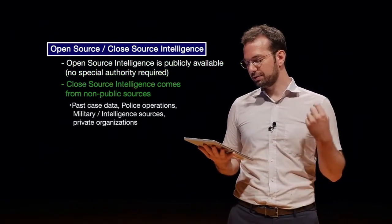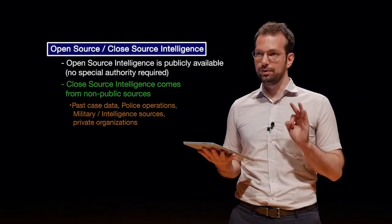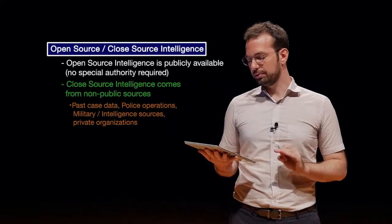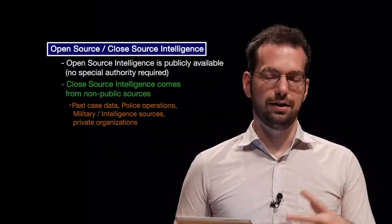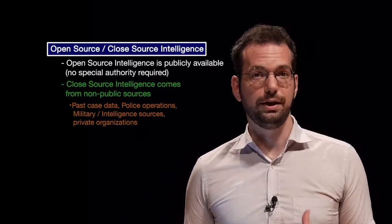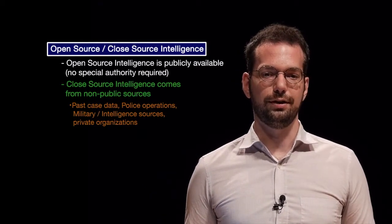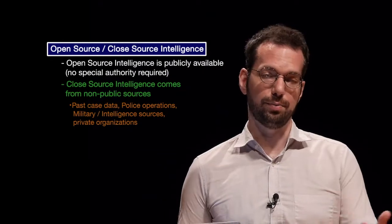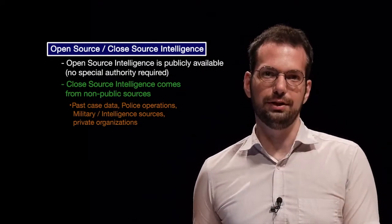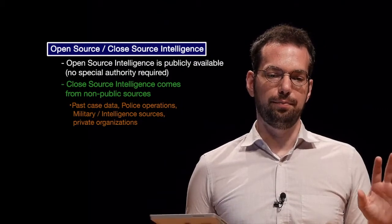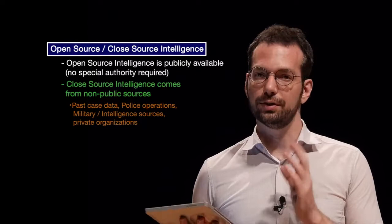Closed source intelligence comes from non-public sources — like past case data from law enforcement, police operations, military and intelligence sources, private organizations, and a lot of other places that have information not necessarily available to the public. The difference between publicly available and not publicly available: usually closed sources are higher quality and more trustworthy, while open sources are usually lower quality and we don't necessarily know if we can trust them.